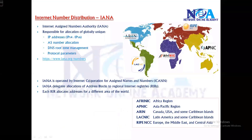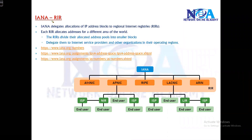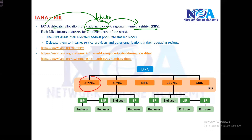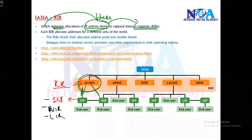These RIRs are responsible for delegating all these addresses to regional service providers. Looking at the hierarchy: IANA delegates blocks of IPv4, IPv6, or autonomous system numbers to the RIRs. Each RIR then divides its block further and allocates to different ISPs, National Internet Registries, or Local Internet Registries.